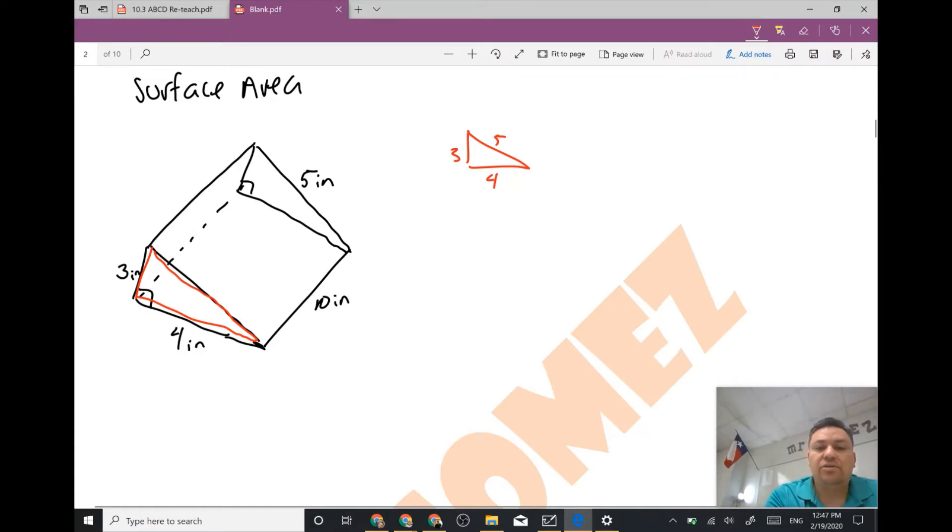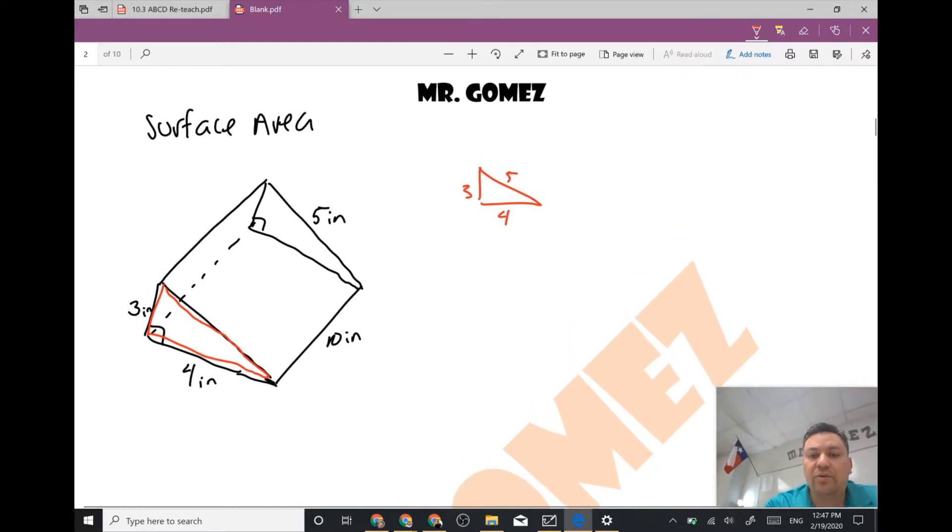The formula to find the area of a triangle is just area of a triangle equals base times height divided by 2. Now this is my base and I have two of them, I have another one over here in the back.